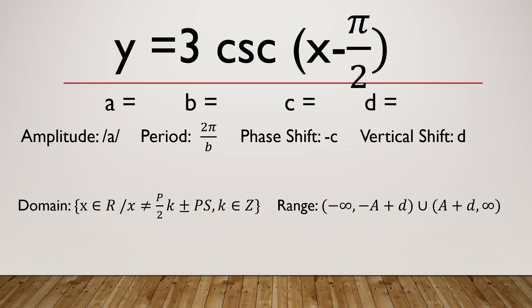Now, let us have the given example: y is equal to 3 cosecant of quantity x minus pi over 2. The first thing that we need to do is check if this given function is in its standard form. It is in standard form if it is written as y equals a cosecant b times quantity x minus c, plus d. As you can see, it is written in its standard form.